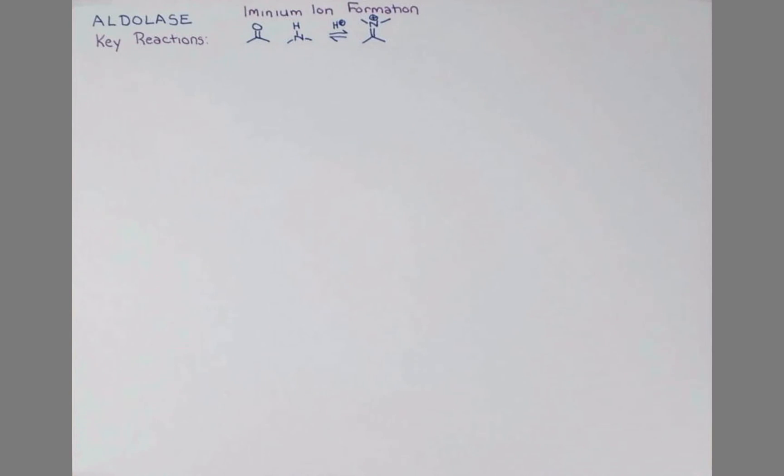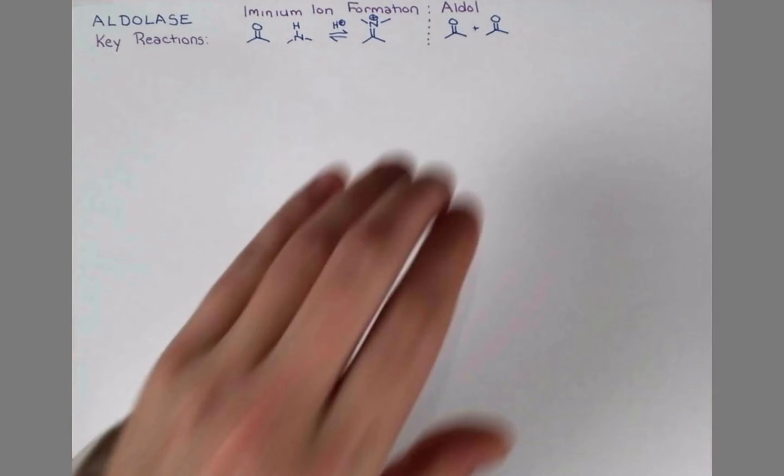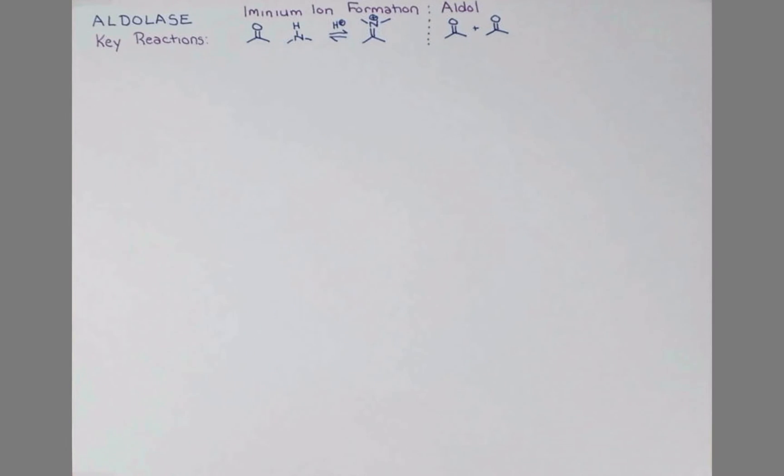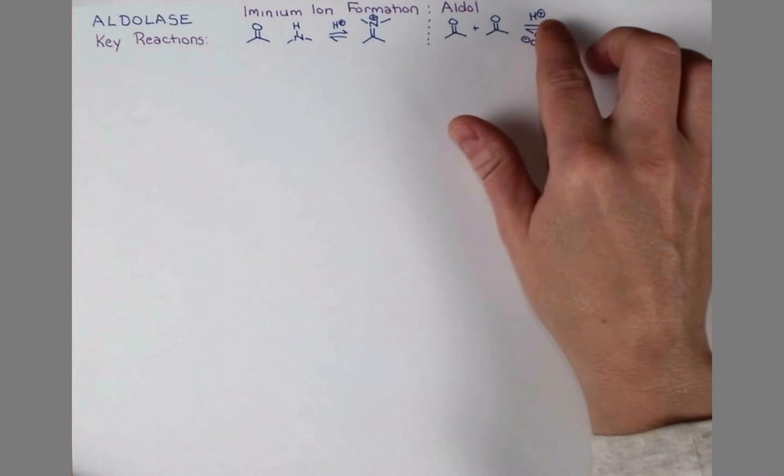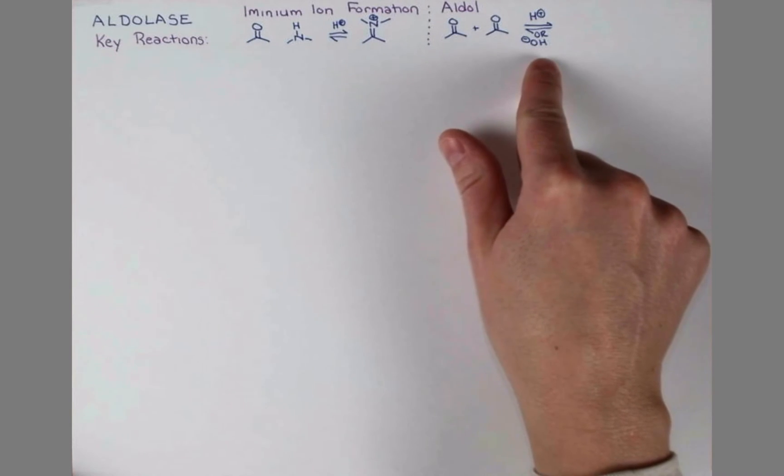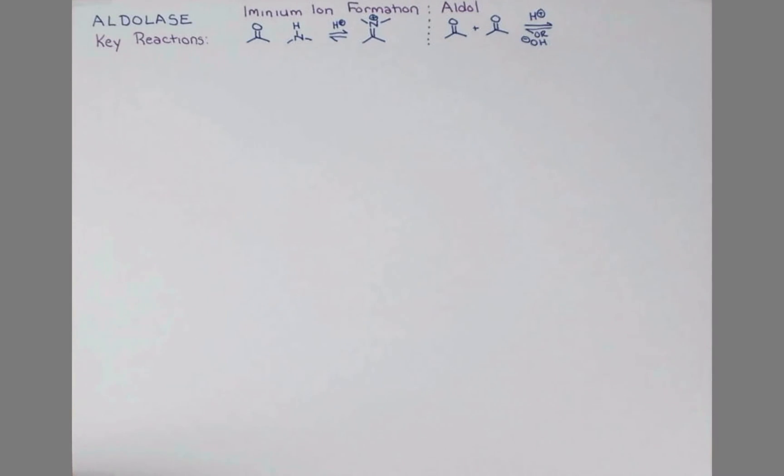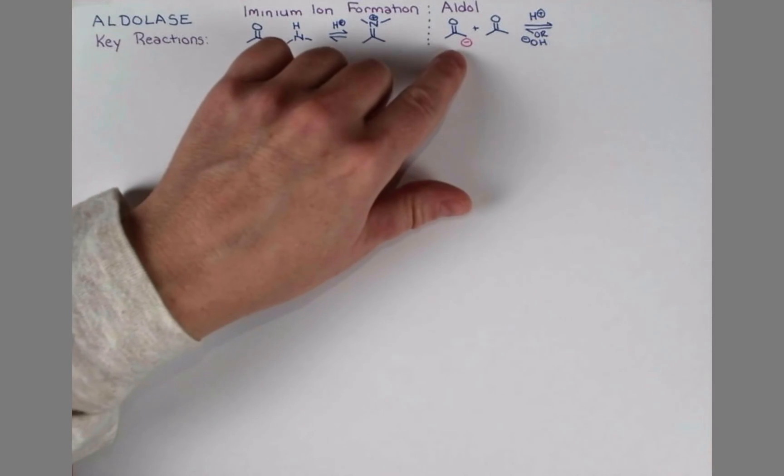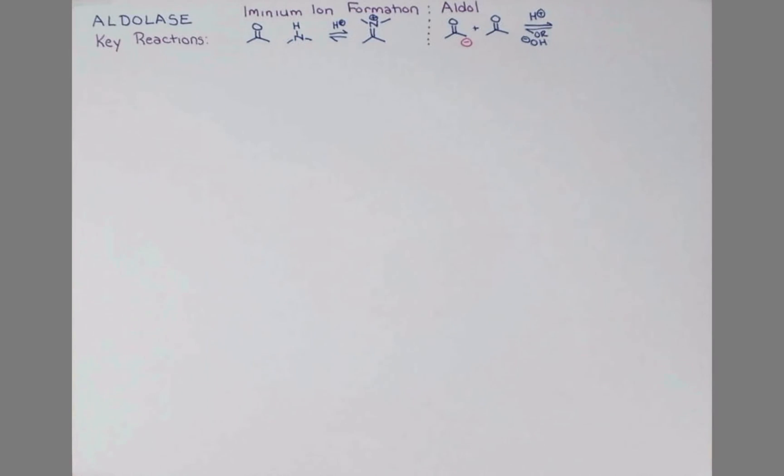The second reaction we need to review is the aldol condensation. Here we have two ketones, and we can react these in the presence of acid or base. Under acidic conditions, we'll form an enol from one of these reactants, and under basic conditions, we'll form an enolate. Let's use the base-catalyzed example and show the enolate that will form. This enolate can then attack the unreacted ketone, and following a protonation step, we'll get a hydroxy ketone.